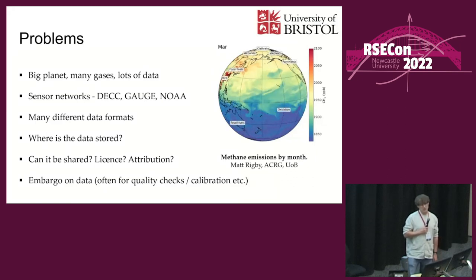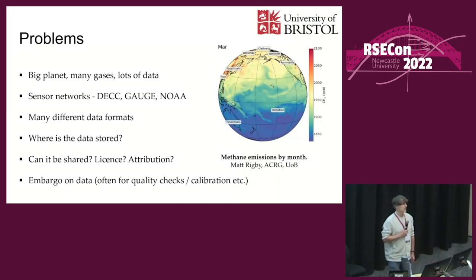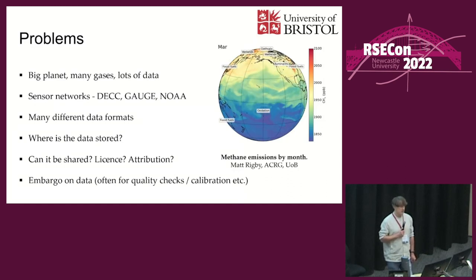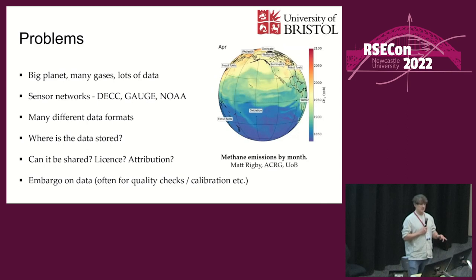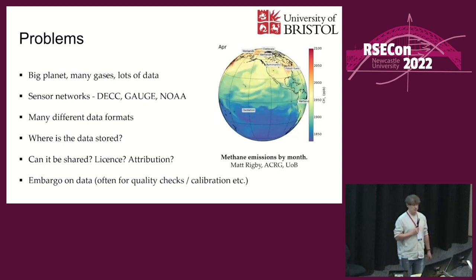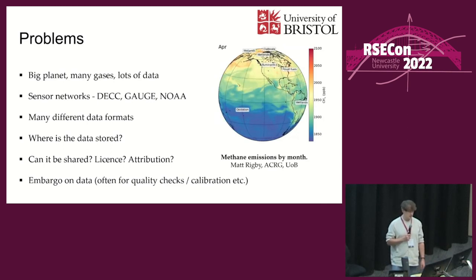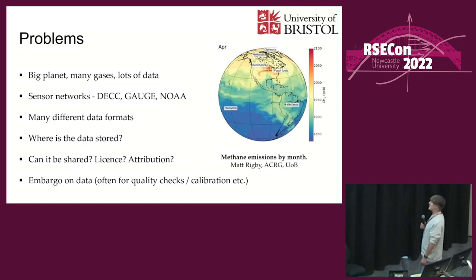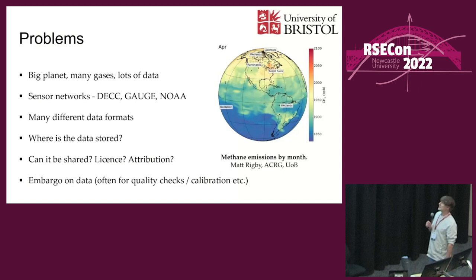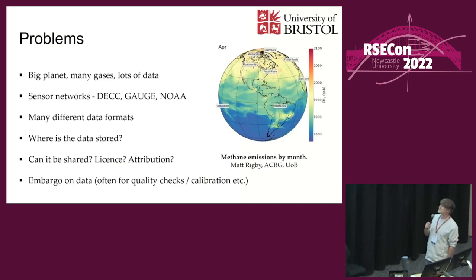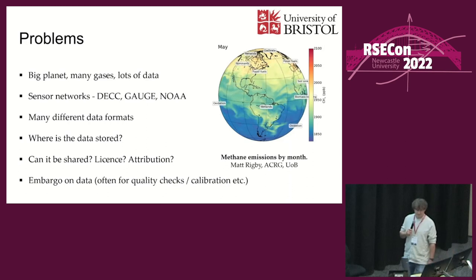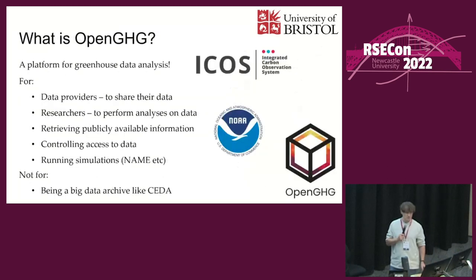I'm not sure if 'embargo' is quite the right term, but data is sort of held back for quality checks - to make sure all the calibration and everything is correct. So sometimes people want to sit on data for a while to make sure it's all correct before sending it out to other people. Those are some of the issues. And this is a nice video made by my boss showing methane emissions around the world from lots of different sources. So what is OpenGHG? It's a platform for greenhouse gas data analysis.